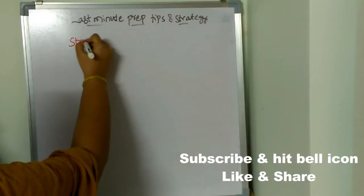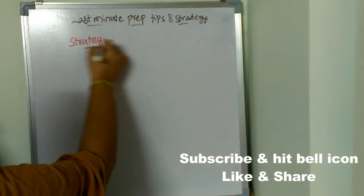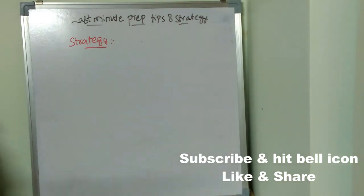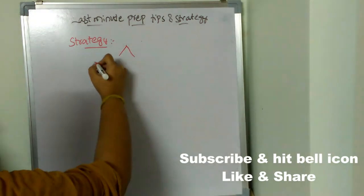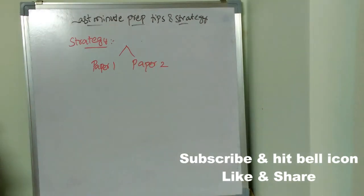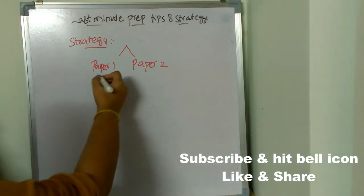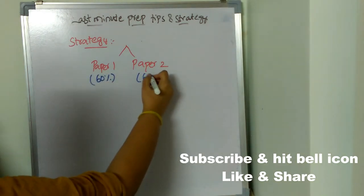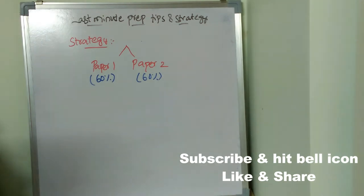Let's see the strategy to qualify the UGC NET exam easily. There are two different papers: Paper 1 and Paper 2. If you want to qualify this exam, you must get 60 percent in Paper 1 and 60 percent in Paper 2. In order to qualify, you must individually get 60 percent of marks in each paper.